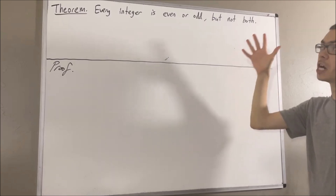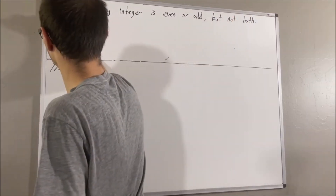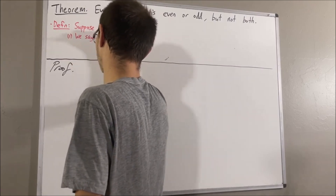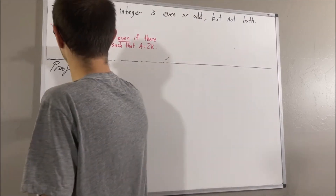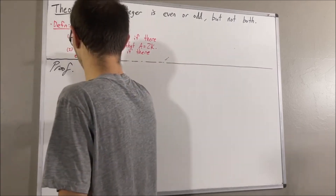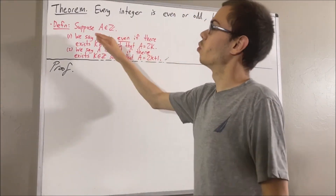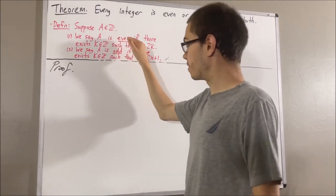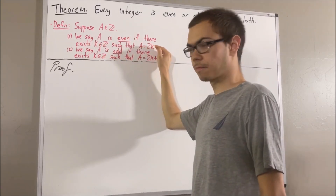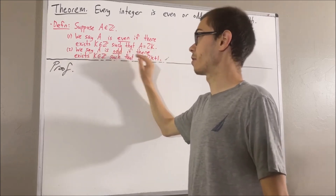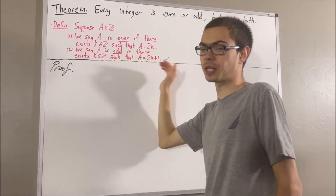Our definition of an even and odd integer is as follows. Suppose A is an integer. We say A is even if there exists an integer k such that A is equal to 2k. We say A is odd if there exists an integer k such that A is equal to 2k plus 1.